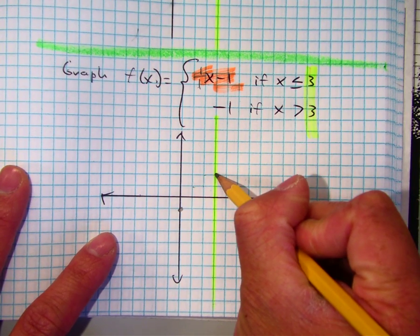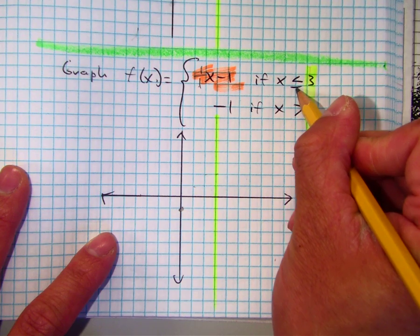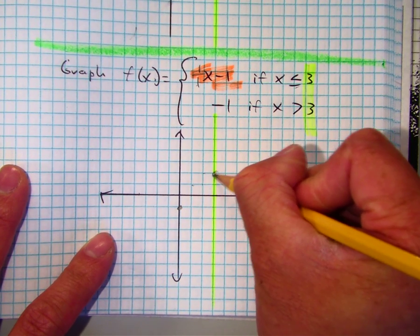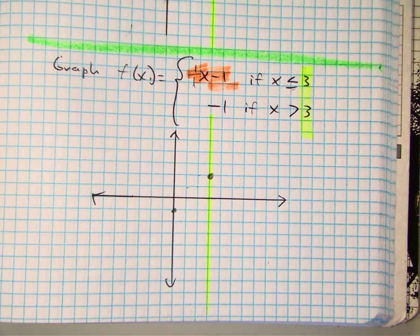Here what do I do? Open or close? Close. Close because it's what? It's an equals. So go ahead and draw your line.